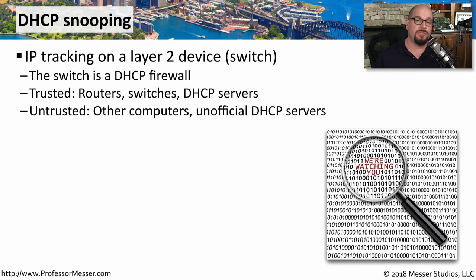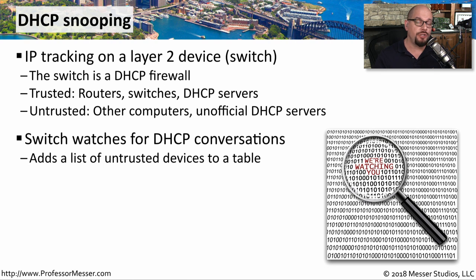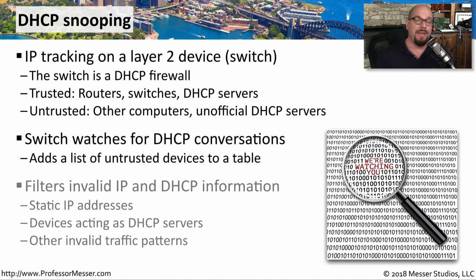One way to cause problems on a network is to install a rogue DHCP server that hands out IP addresses different from your official DHCP server. To prevent this, you can enable DHCP snooping on your switch, which effectively makes the switch a DHCP firewall. You configure certain interfaces as trusted — where your DHCP server or router resides — and other interfaces as untrusted. The switch then watches for DHCP conversations, builds a table of trusted devices, and filters out rogue DHCP server responses, static IP addresses, or other invalid traffic from untrusted interfaces.